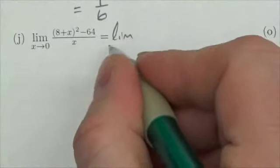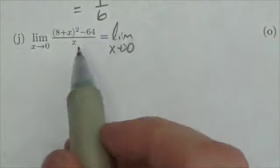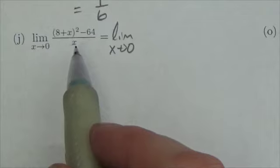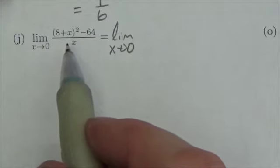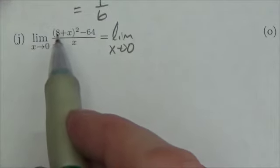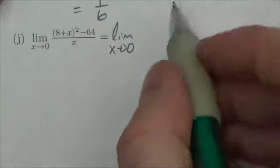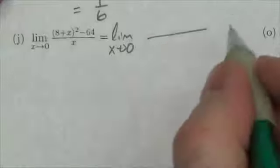So I'm going to leave the limit in there, x approaches 0. Now there are at least a couple of different ways to approach this problem, but I suspect a lot of you, when you see that 8 plus x there squared, are going to be tempted to expand that out. So let's do that.